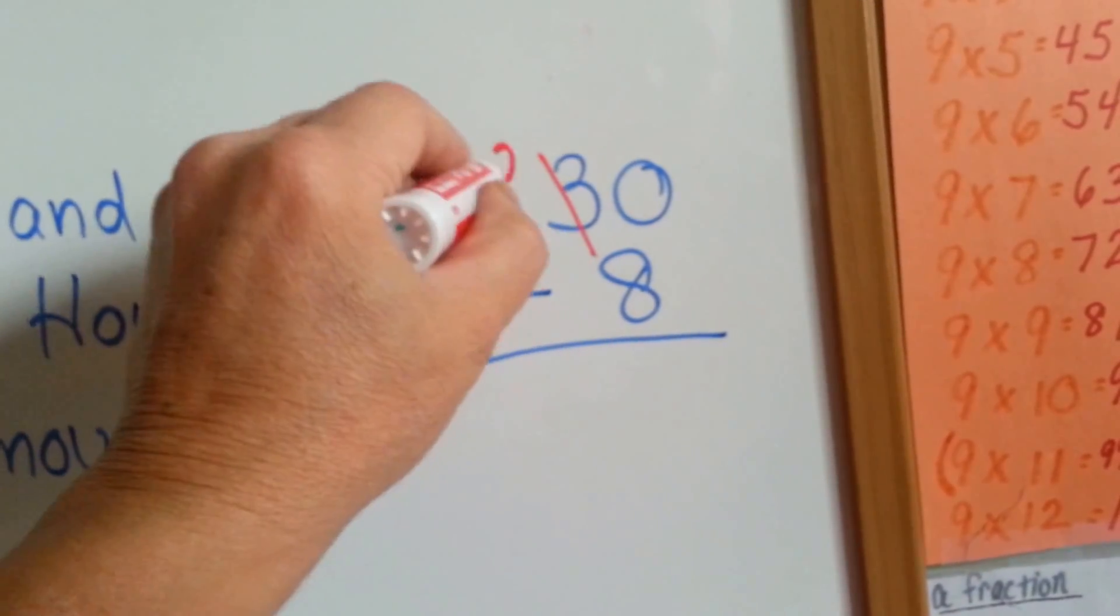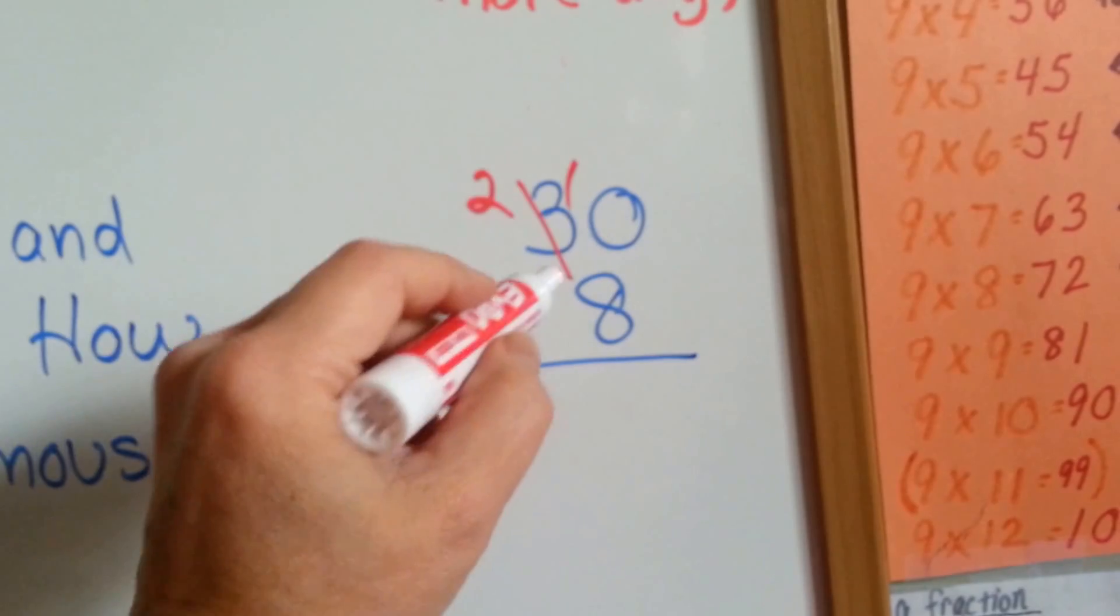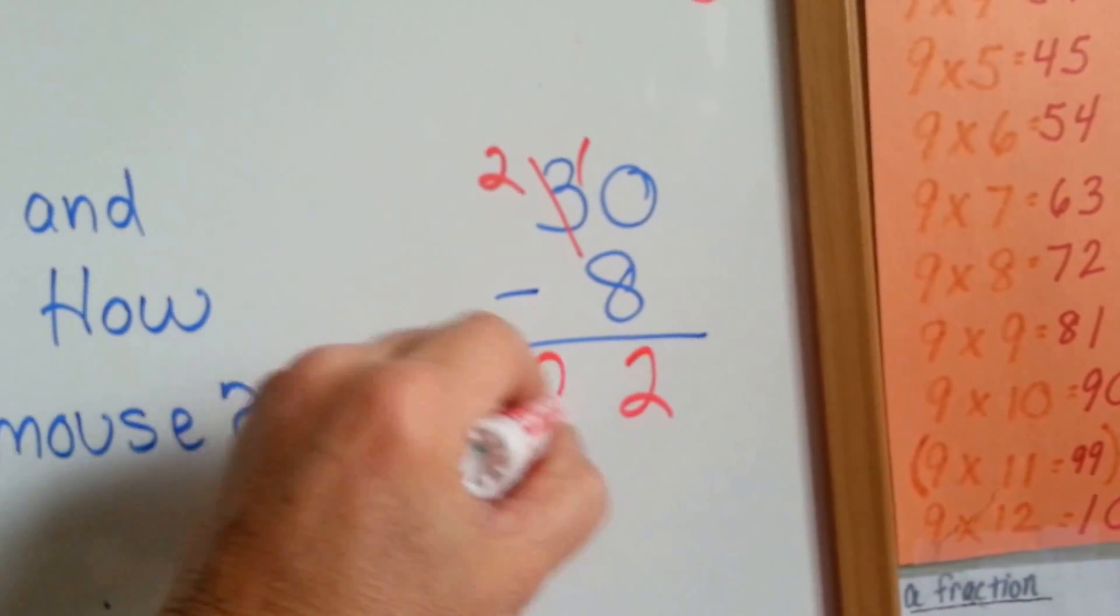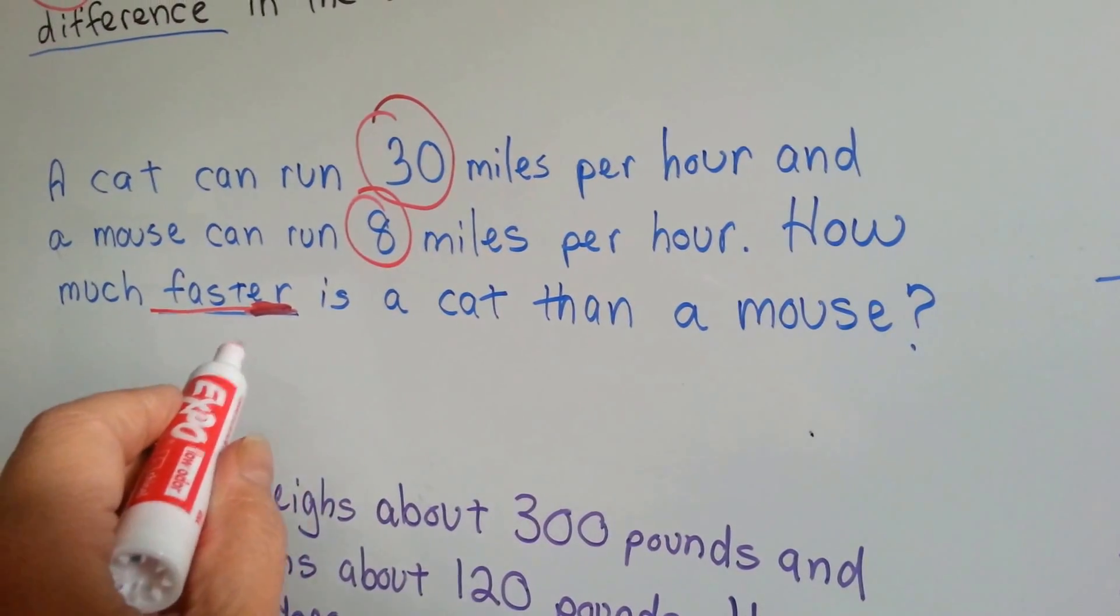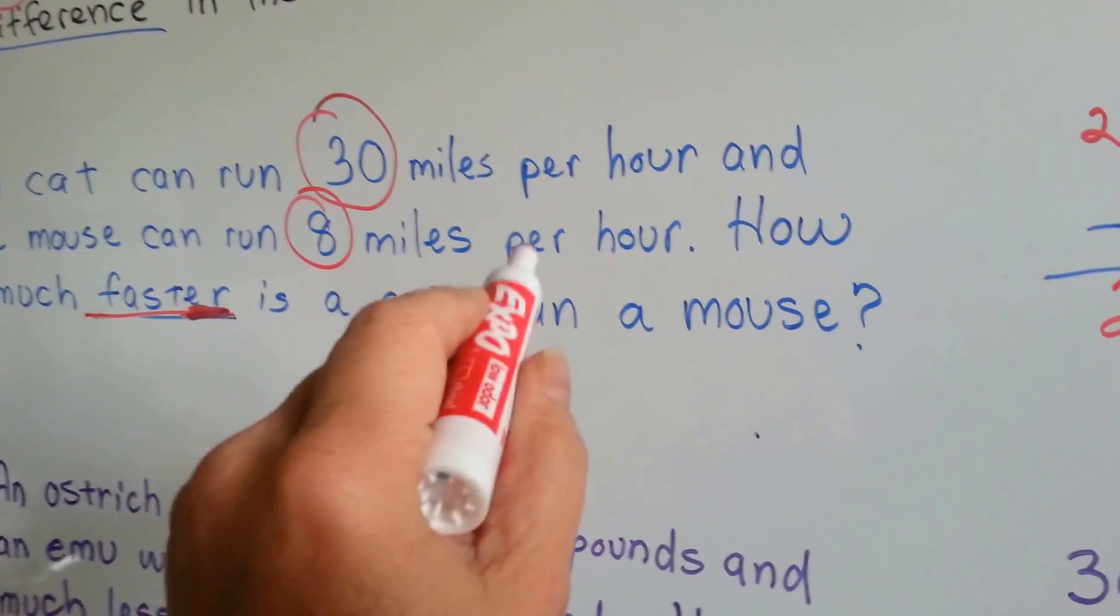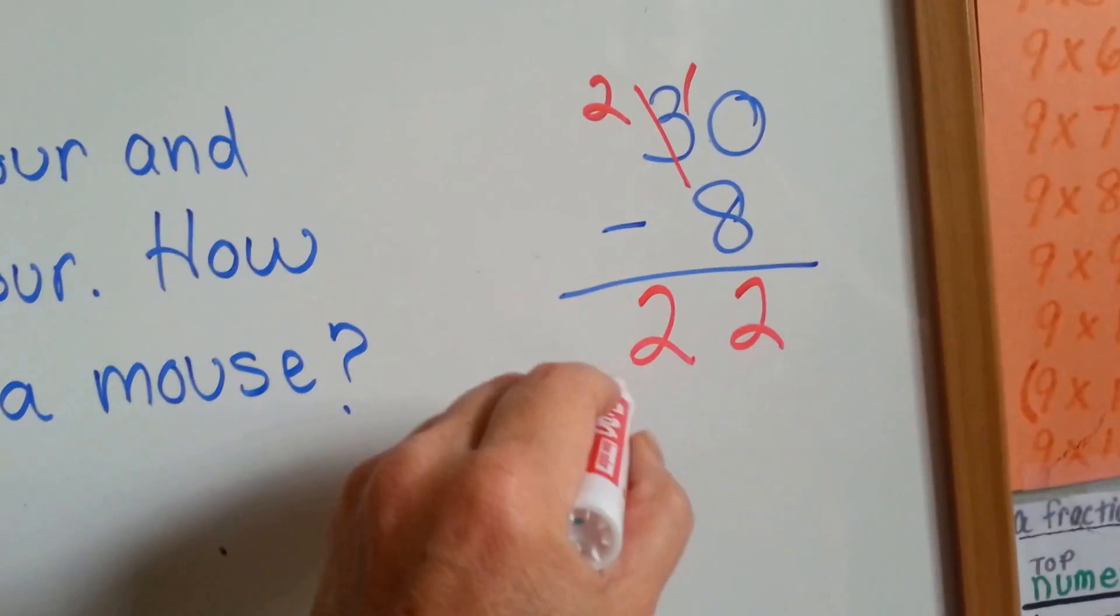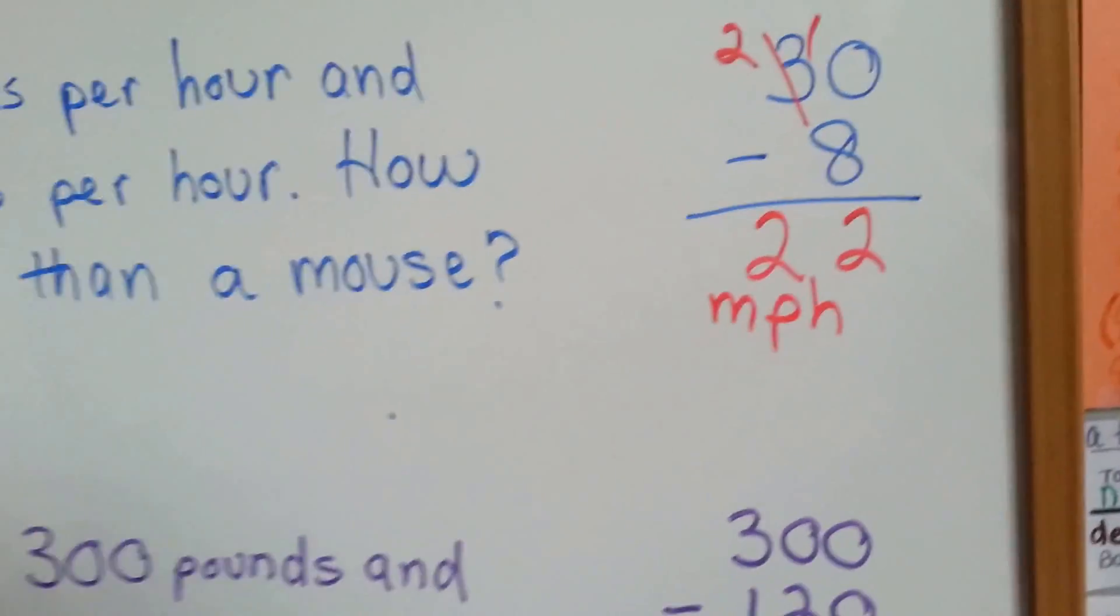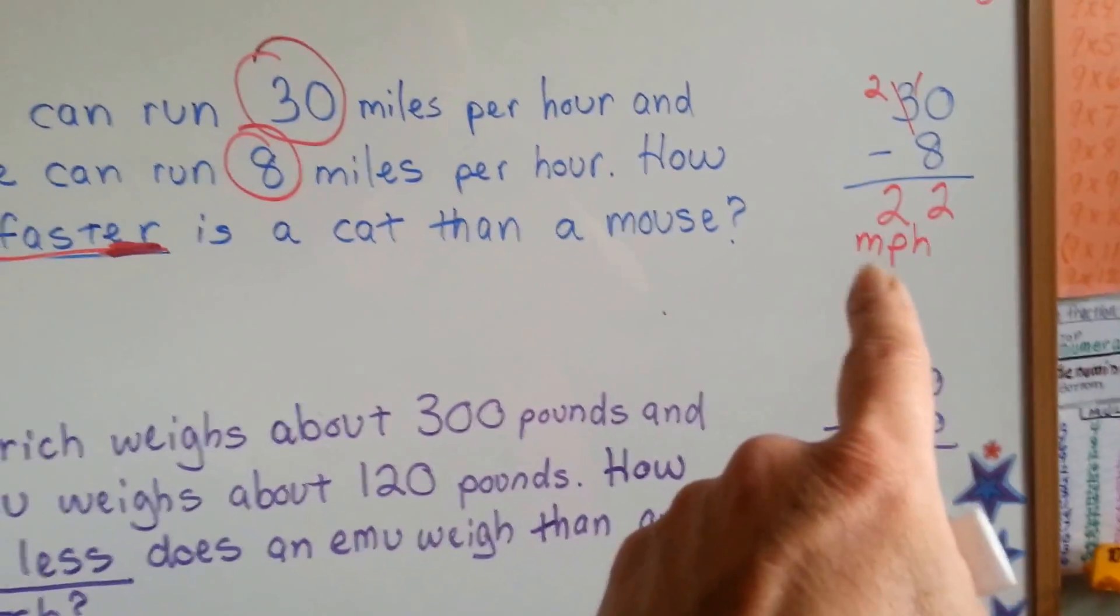Can you have 0 and take 8 away? Nope. So, that's going to become a 2 and that's going to become a 10. 10 take away 8 is 2. 2 take away nothing is 2. 22. 22 what? 22 miles per hour. And you can say MPH for miles per hour. A lot of people write it that way.